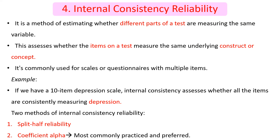The fourth method is internal consistency reliability. It is a method of estimating whether different parts of a test are measuring the same variable. It assesses whether the items on a test measure the same underlying construct or concept. This method is commonly used for scales or questionnaires with multiple items.